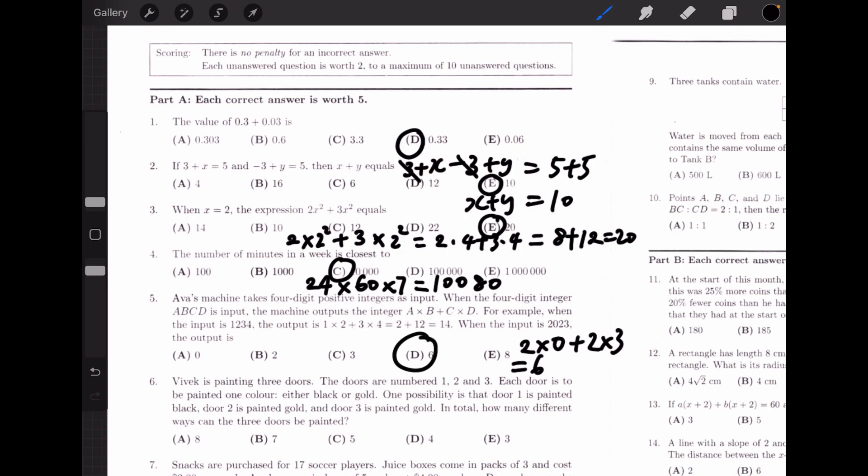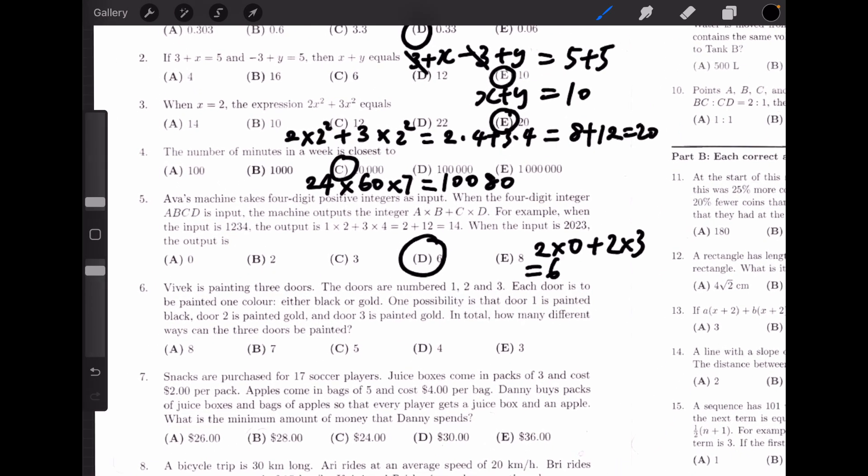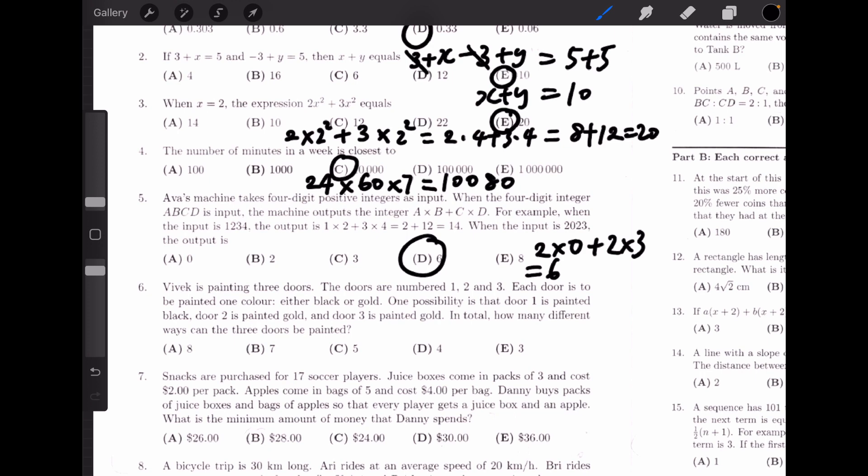Number 6. VFAC is painting 3 doors. The doors are numbered 1, 2, and 3. Each door is to be painted in one color, either black or gold. One possibility is that door 1 is painted black, door 2 is painted gold, and door 3 is painted gold. In total, how many different ways can 3 doors be painted? Here we have 3 doors, and for each door there are 2 choices, gold or black. So the answer should be 2 times 2 times 2, which is 8, choice A.